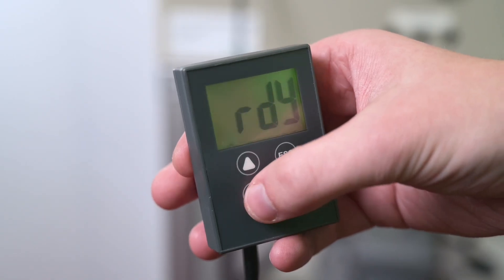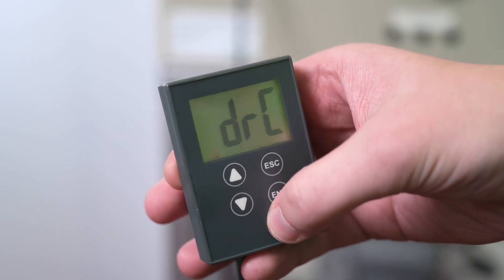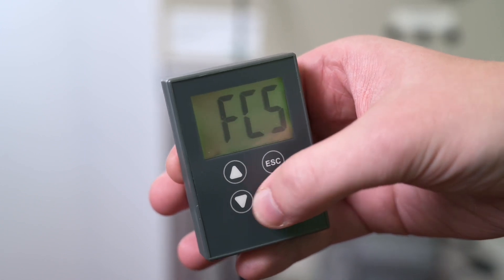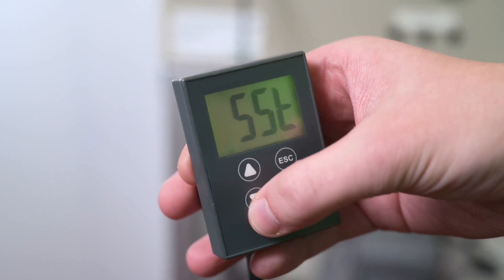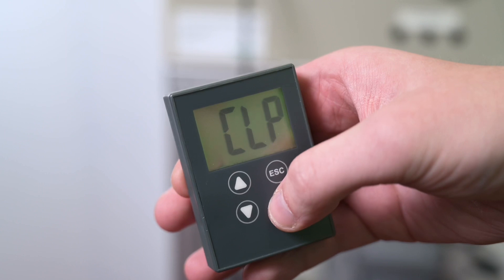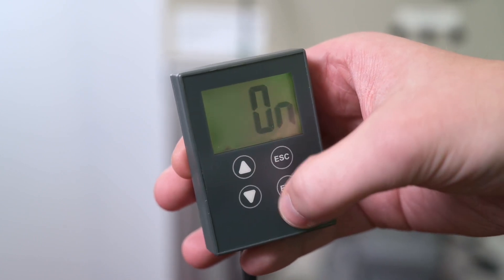First, we are going to set the parameter torque control CLP. By default, the torque control is set to ON. Otherwise, if torque control CLP is set to OFF, starting and deceleration are controlled by voltage variation.